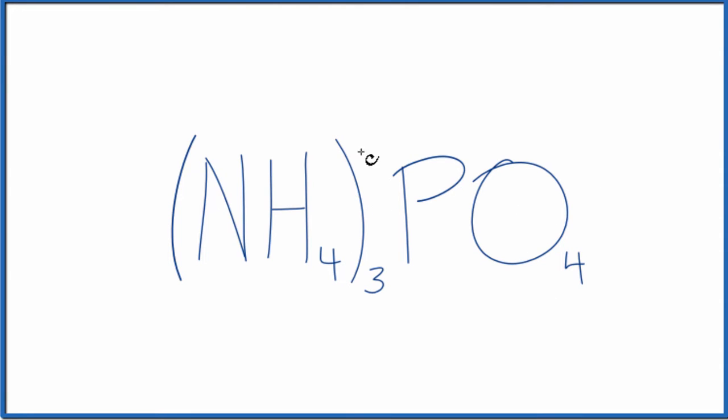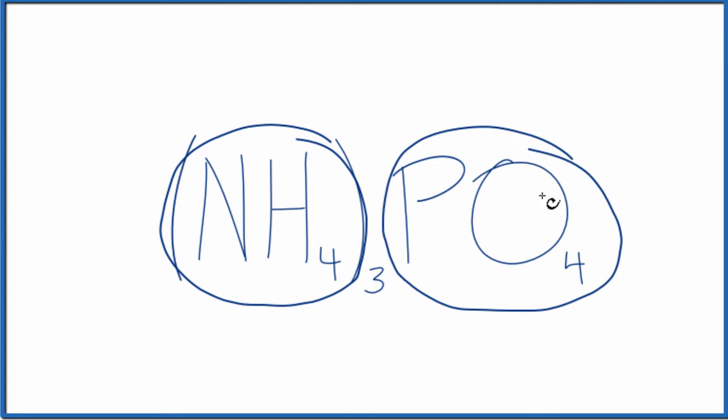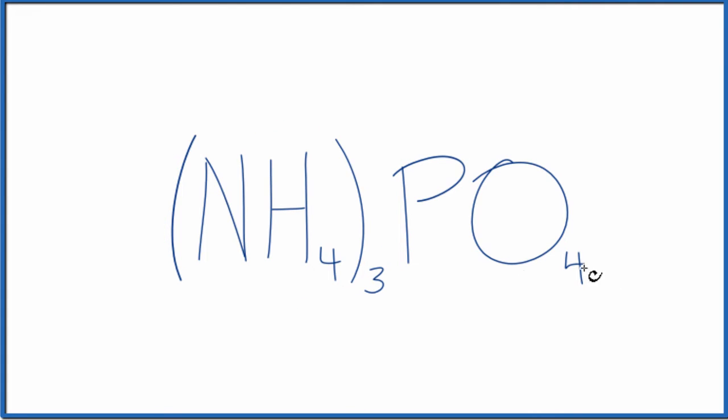So we have two ions here. This is a polyatomic ion. This is the ammonium ion right here, and this is the phosphate ion. You really just need to memorize the ammonium ion and the phosphate ion. These are both very common in chemistry.